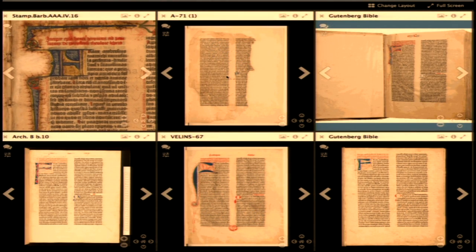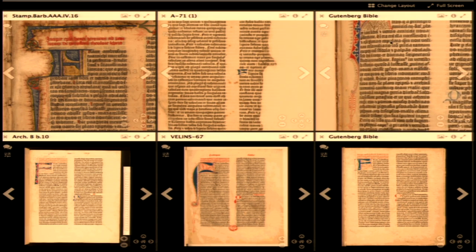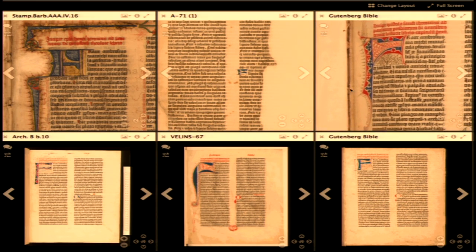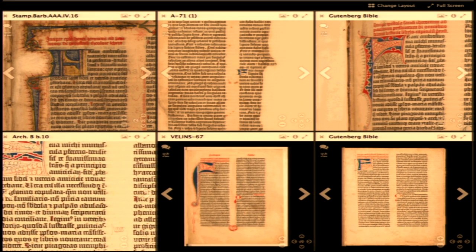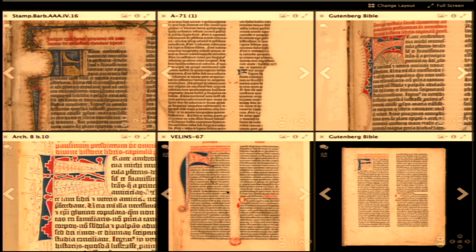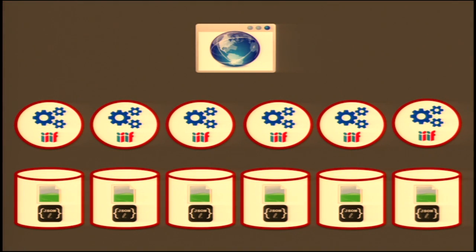We can compare even more. Here's a wonderful example of six versions of the Gutenberg Bible at six different institutions being zoomed and compared in the same workspace. This is where the diagram gets complicated: six different institutions, their images, associated metadata, each implementing the two APIs, delivered to a single web application.